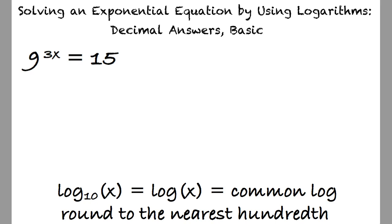Using the logarithm of a power property, we can rewrite the equation as 3x times the log of 9 equals the log of 15. Since these logarithms have the same base, we can divide them to isolate x on one side of the equation. Exactly.